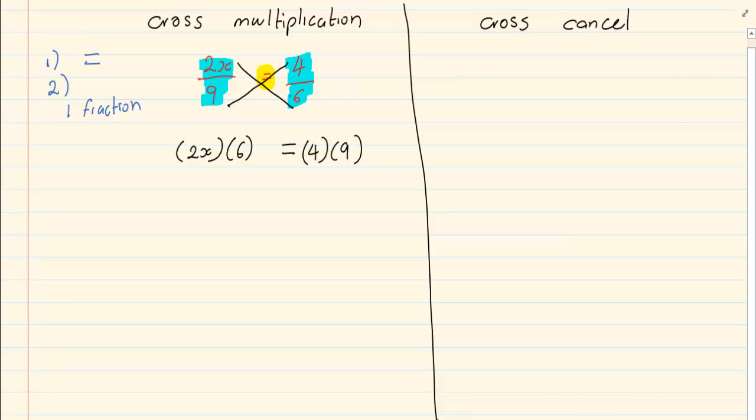Once we've cross multiplied, we can now solve using normal simplifying and solving for x rules. So we have 12x is equal to 36, and then we divide by 12, and we have x is equal to 3.